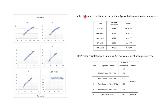We also calculated the Pearson correlation of gestational age. This showed that the gestational age and the fetal foot length showed a Pearson correlation of 0.981 with p-value less than 0.001.